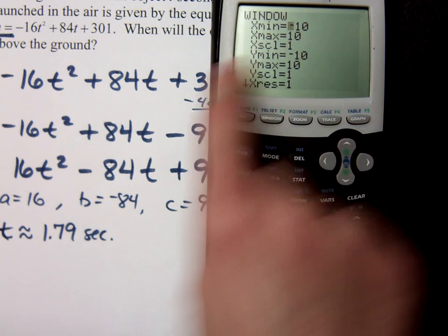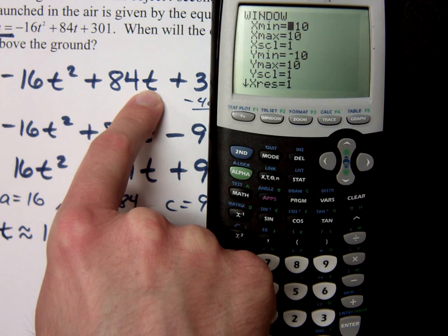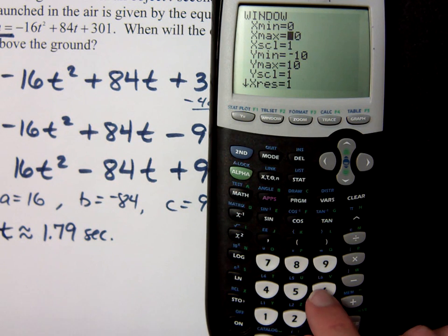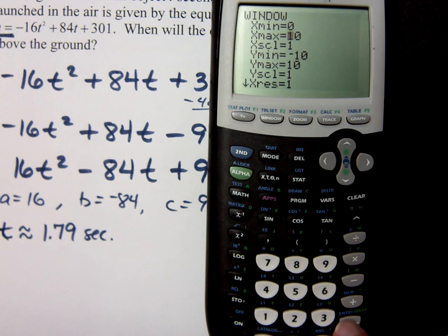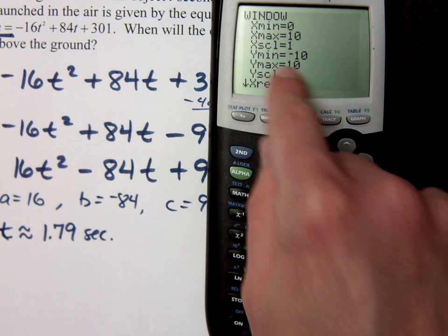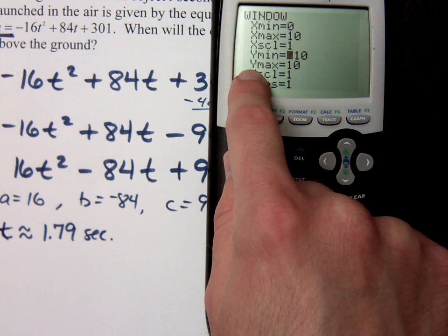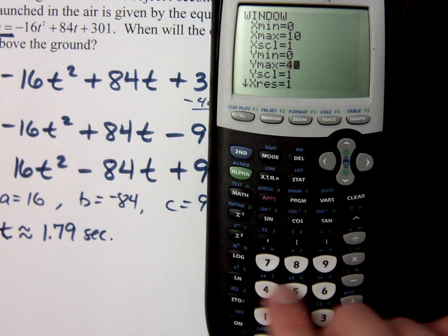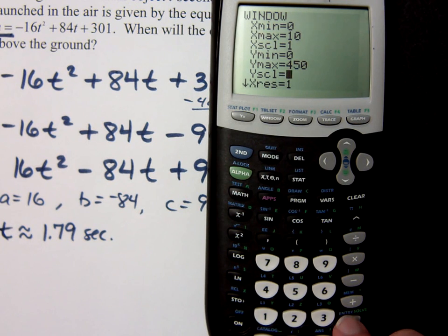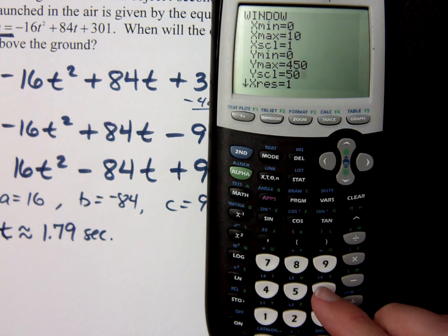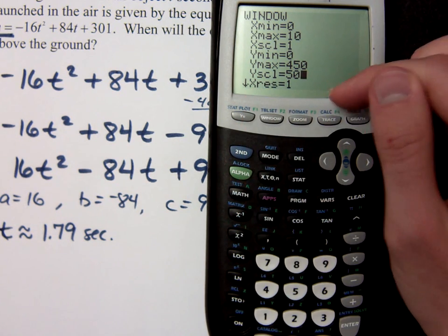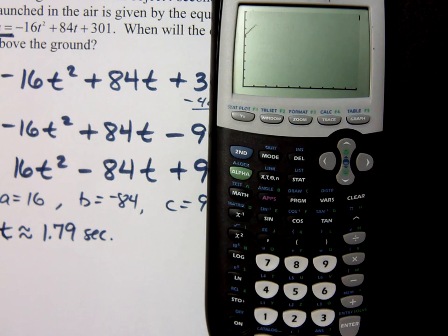Now, the x value is corresponding to the t value that we have here, which is time. That's your independent variable. So the minimum time is going to be 0 because we're not talking about negative time. And let's go out to a time of 10. That sounds good. Now, your y min and y max, your y values are your height. So the minimum height is going to be 0. Let's say the maximum height is 450. Let's do a y scale of 50 to see what that looks like. Remember, a y scale means how many units each checkmark represents on the axes. So now let's graph this and see what happens.